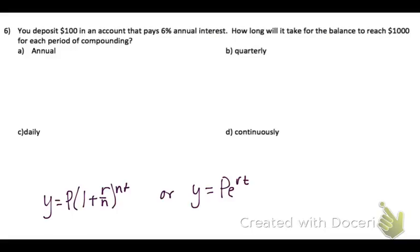So we have an initial deposit of $100, we have 6% interest, how long will it take for the balance to reach $1,000? So you're going to do that for each of these different compounding periods. So it's saying how long will it take? We're going to be solving for T. So I want to know whenever I have $1,000, plug that in for Y.